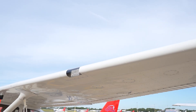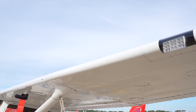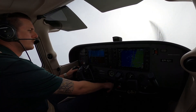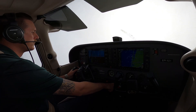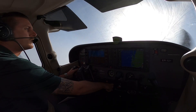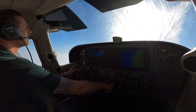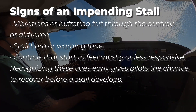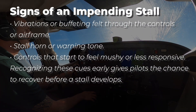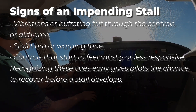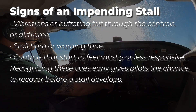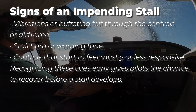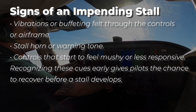Most aircraft are equipped with stall warning systems that alert pilots before they reach the critical angle of attack. When an airplane doesn't have built-in warnings, pilots must rely on an AOA indicator or their own situational awareness to avoid exceeding that limit. Typical warning signs of an impending stall include vibrations or buffeting felt through the controls or airframe, a stall horn or warning tone, and controls that start to feel mushy or less responsive. Recognizing these cues early gives pilots the chance to recover before a stall develops.